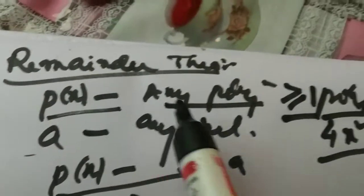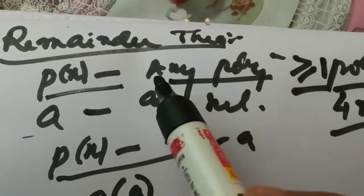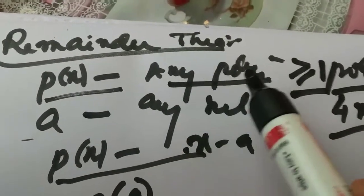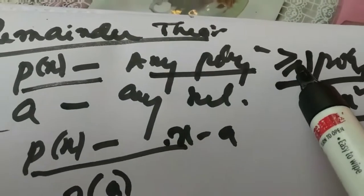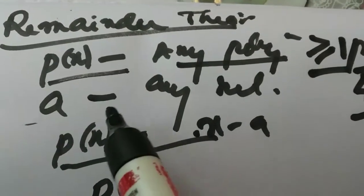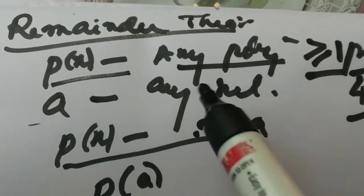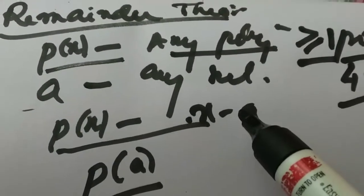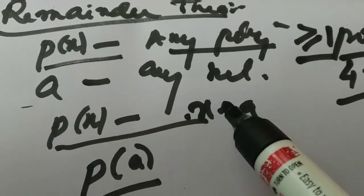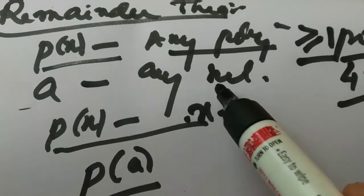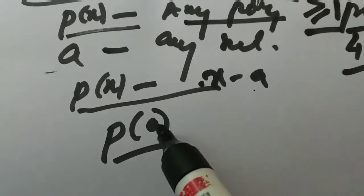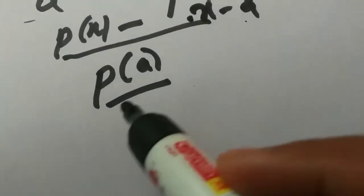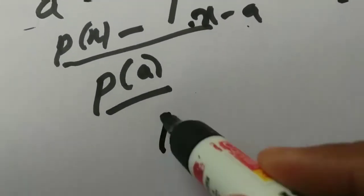To repeat: if P of X is any polynomial of degree greater than or equal to one, and 'a' is any real number, and P of X is divided by the linear polynomial X minus a, then the remainder will be P of a. So I'll give an example.